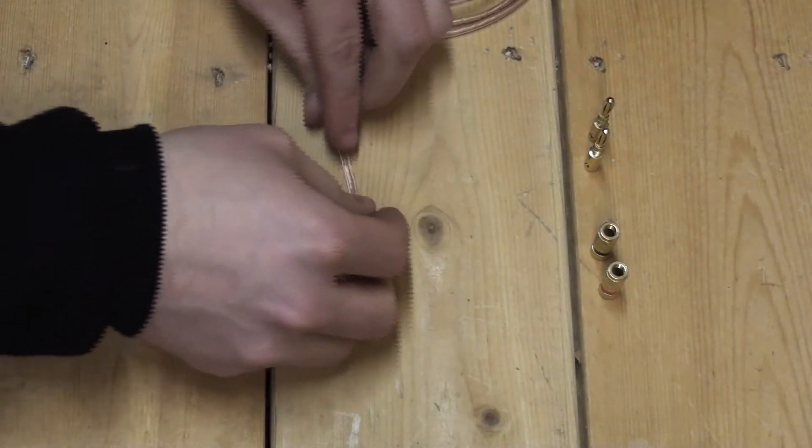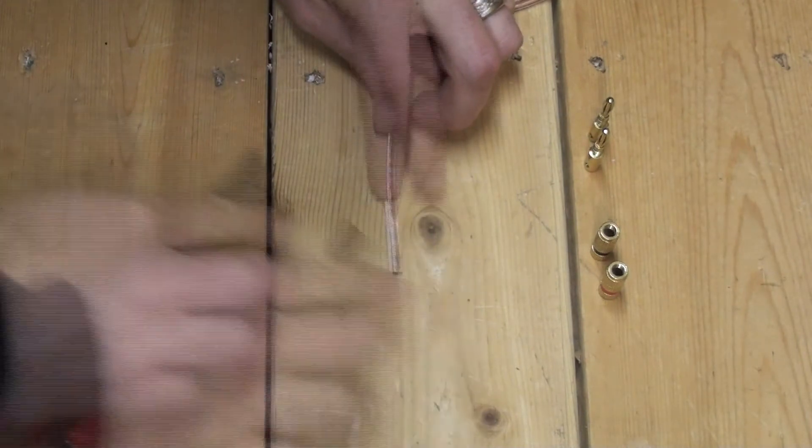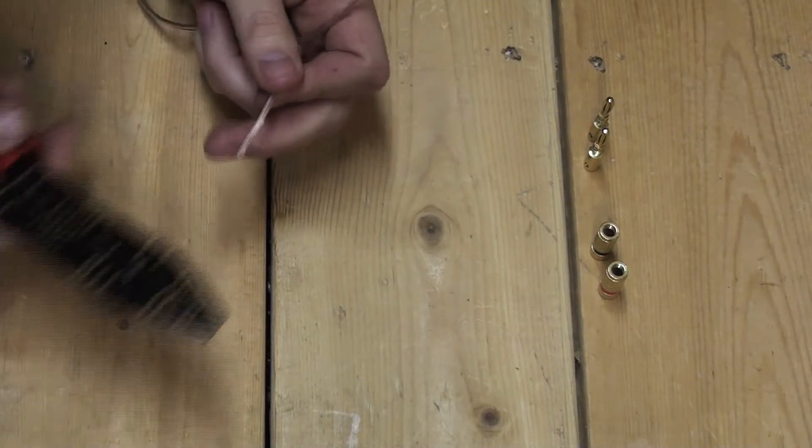Start by separating the positive and negative lead wires and then strip each wire.